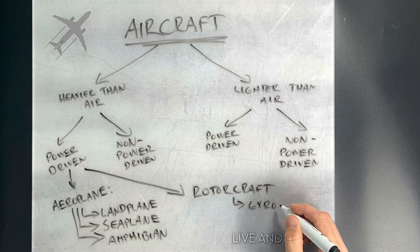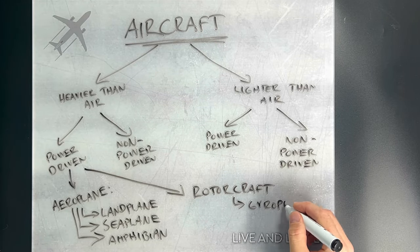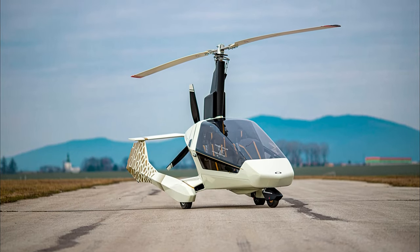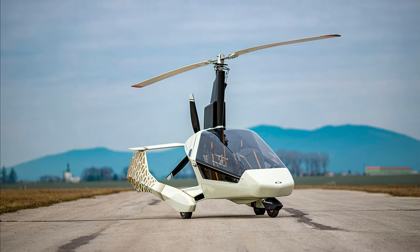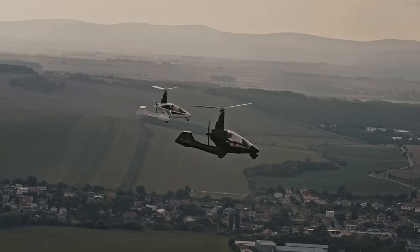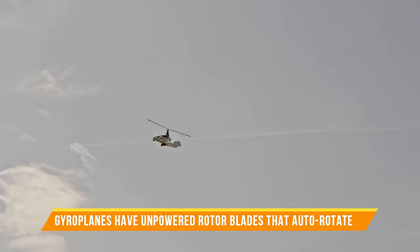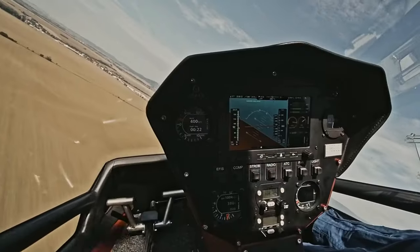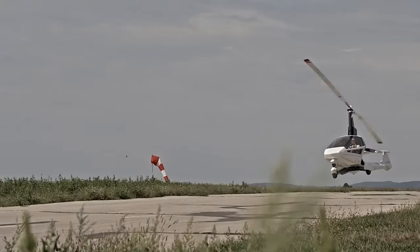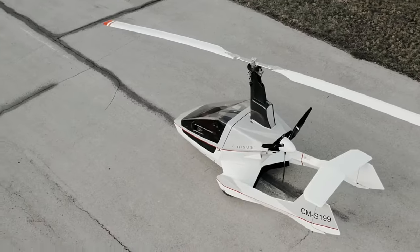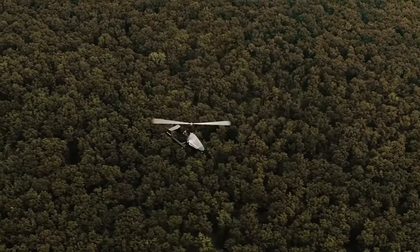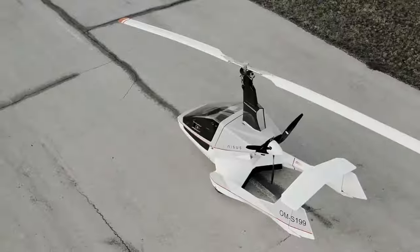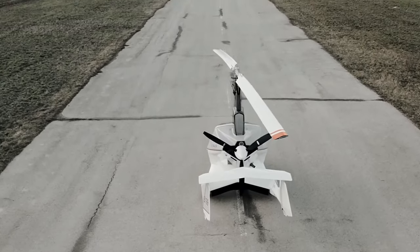Gyroplanes, or autogyros, are a unique and lesser known rotorcraft category. These aircraft combine elements of both fixed wing airplanes and helicopters, offering a thrilling flight experience. Unlike helicopters, gyroplanes have unpowered rotor blades that auto-rotate, generating lift as air rushes over them during forward motion. This unique design provides stability and safety that sets them apart. Land gyroplanes are known for their versatility, making them suitable for various tasks from agricultural spraying to aerial observation.